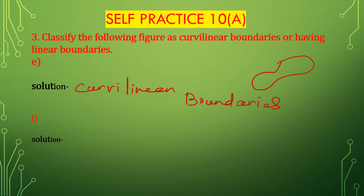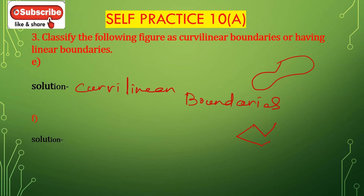Now F bit. First draw the given figure. The boundary which contains straight lines or line segments is called the linear boundary. This boundary contains only straight lines — all are straight lines. So this is a linear boundary.